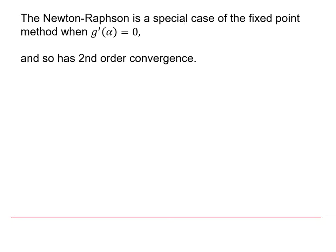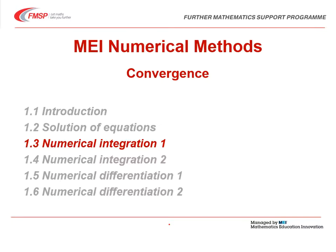And then finally the Newton-Raphson method can be shown to be a special case of the fixed point method when g dash of alpha is zero, and of course this means that it has second order convergence, and that explains why it's usually faster than all the other methods. So that concludes this video and we'll be looking at numerical integration in the next video.